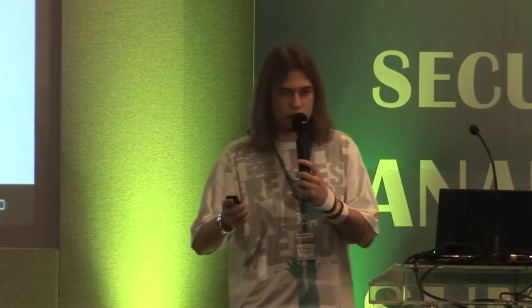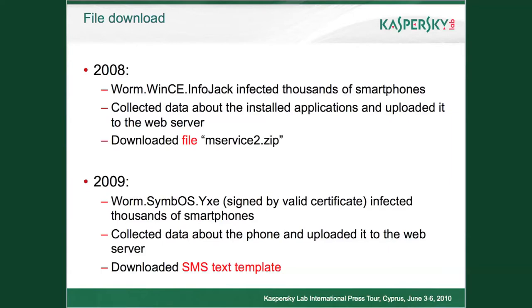Another example is a worm for Symbian devices named ICSI — a signed piece of mobile malware that also infected thousands of smartphones. It collected data about the phone such as phone number and model, and uploaded it to a web server. It also downloaded an SMS text template. ICSI spread via SMS by scanning the infected device's contact book, gathering all numbers, and sending an SMS like 'here are my new pictures' with a link. If the user received and clicked the link, the worm was downloaded and executed.